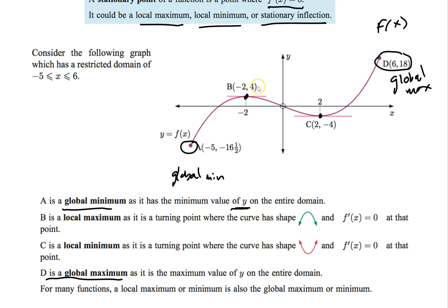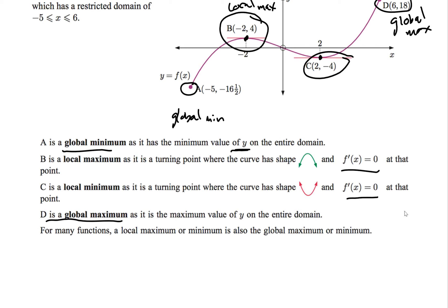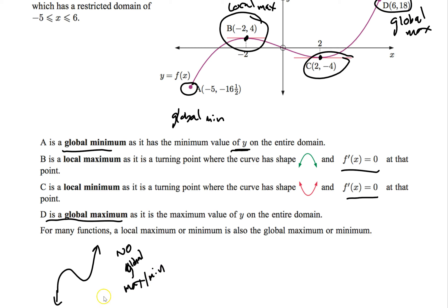Our local max and local min are these points. Local max and local min have a shape like a peak or a valley — that's when the derivative equals 0. Not all graphs have a local max or min. If I give you a graph that goes to infinity, there's no global max — it keeps going, so no global max or min. There are still relative ones, but no single highest or lowest point.